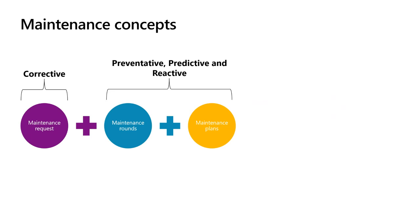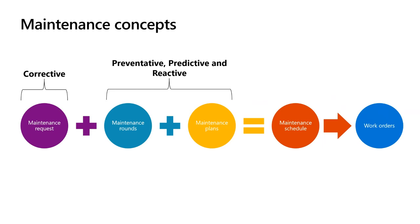These three maintenance components together make up our maintenance schedule. We take all of our maintenance requests, maintenance rounds, and maintenance plans for a certain timeframe and use that to create our maintenance schedule — the list of all the maintenance activities we need to do at a certain time. Once we've created our maintenance schedule, we convert it into work orders, which are then assigned to maintenance workers and used to record the execution of maintenance activities, including the materials, spare parts consumed, and the time of the maintenance workers. You can also manually create work orders as needed.